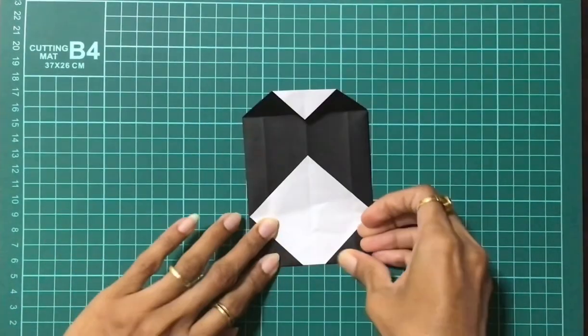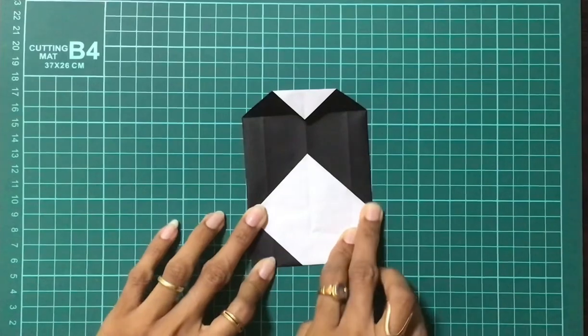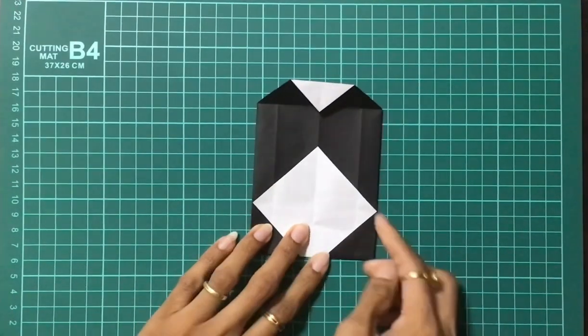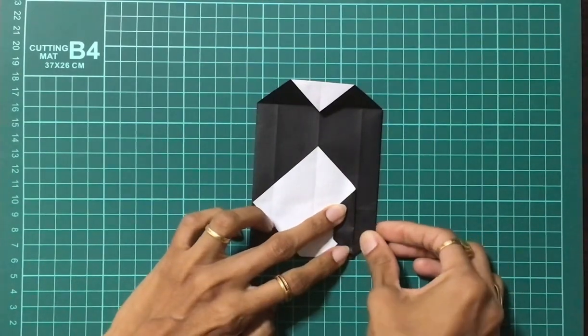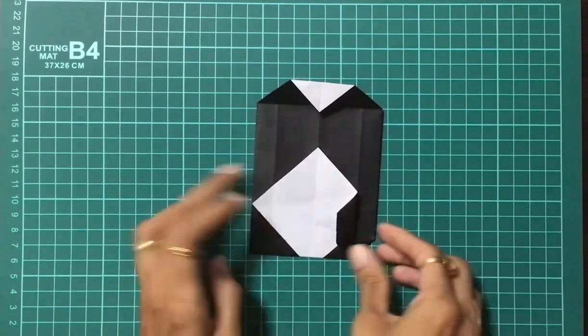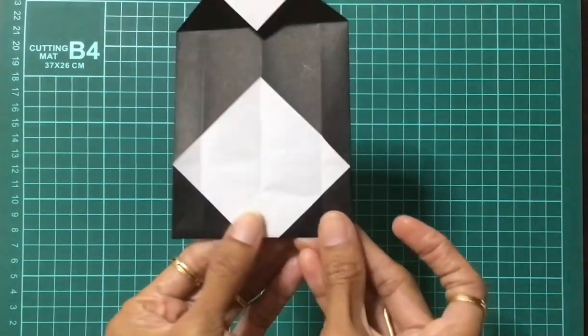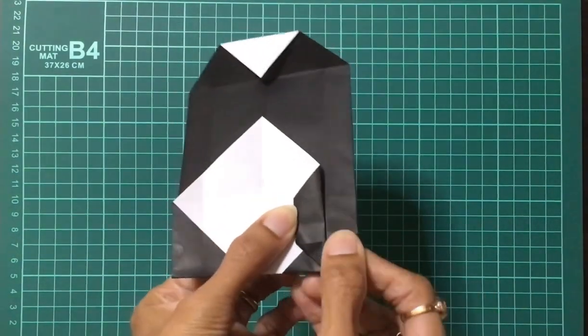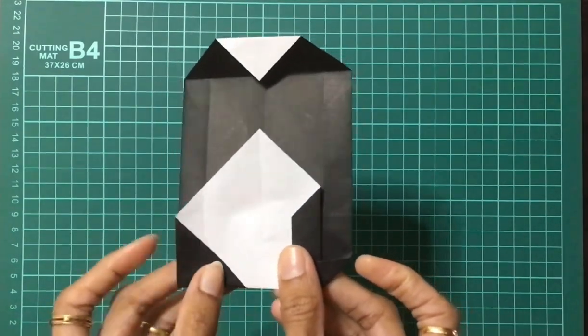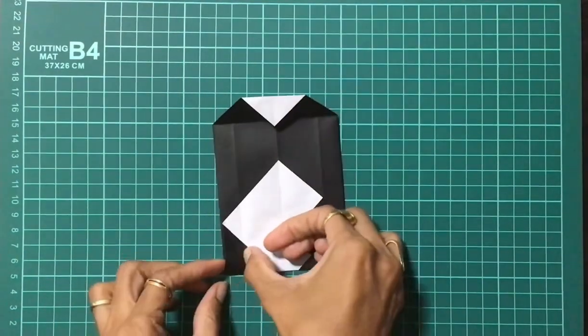Open the flap on the side till the crease line and flatten it as shown. I'll zoom it and do it one more time, like this. Repeat the same thing on the other side too.